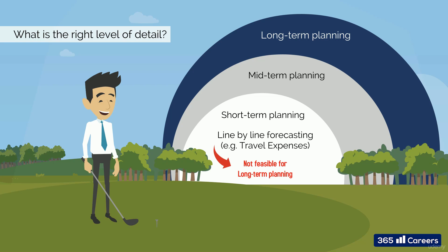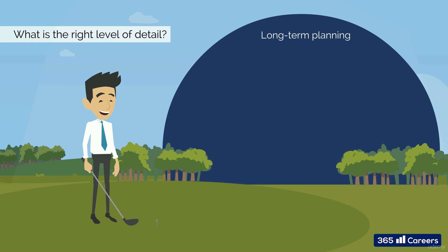The truth is, you can't plan for travel expenses in year 3 and 4, not to mention year 10. There's too much detail in the budget to use its structure for forecasting purposes. Such a great level of detail increases the overall workload immensely, without improving forecasting precision.